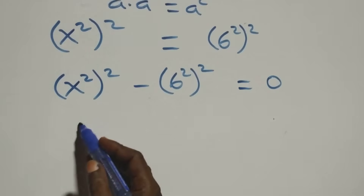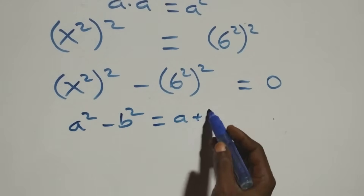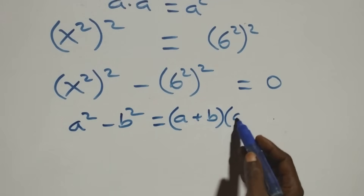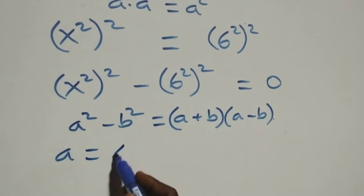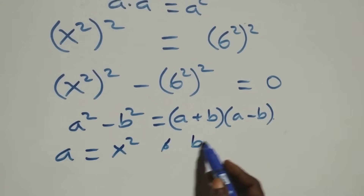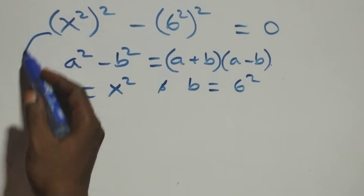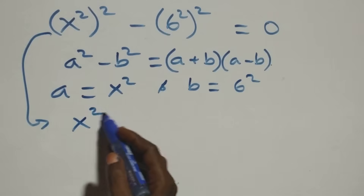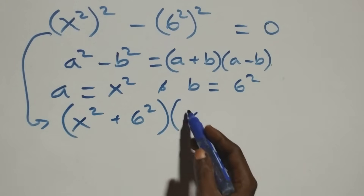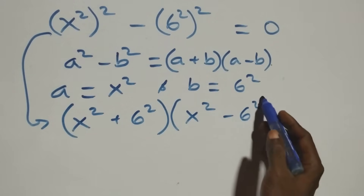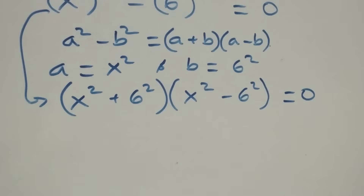This follows from the identity a² minus b² equals (a+b)(a-b). Here, a is x² and b is 6². So we factor x⁴ minus 6⁴ as (x² + 6²) into brackets times (x² minus 6²) in brackets, which equals zero.